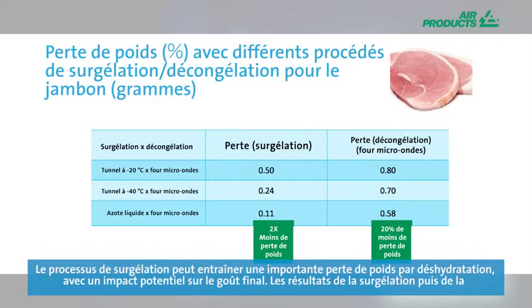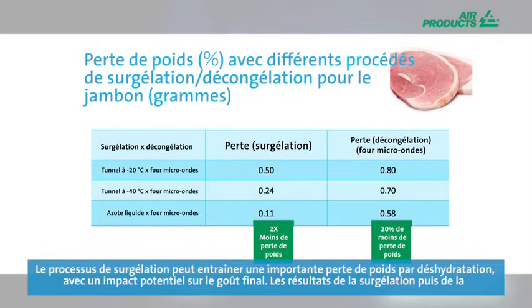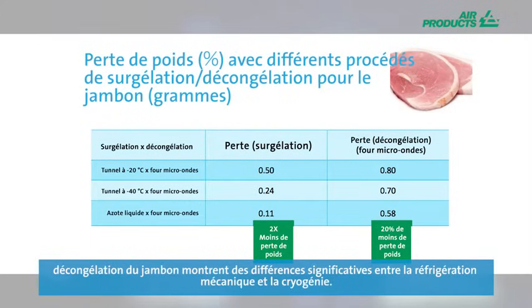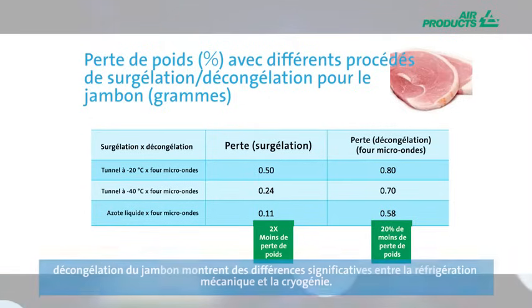The major ice crystal formation in the slower freeze technique would lead to deterioration in texture quality and higher drip loss at the defrost stage of food preparation. The freezing process can also cause severe weight loss through dehydration, which can affect end taste. Results from freezing and thawing of gammon show significant differences when comparing mechanical refrigeration with cryogenics.